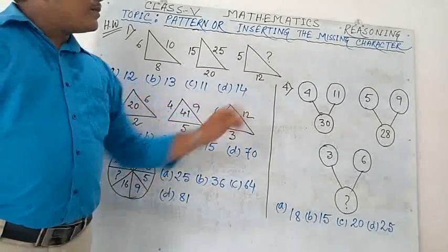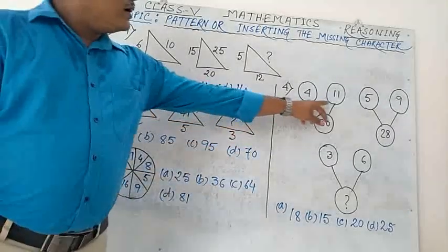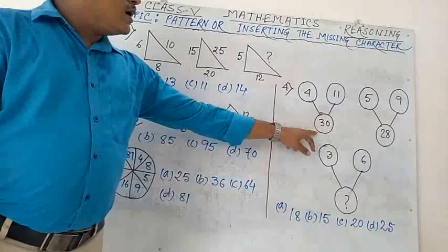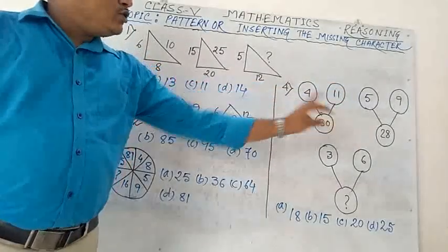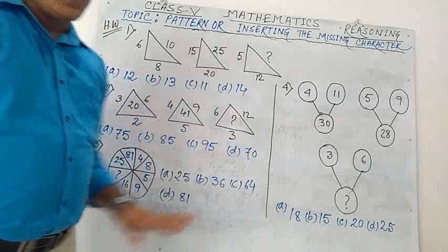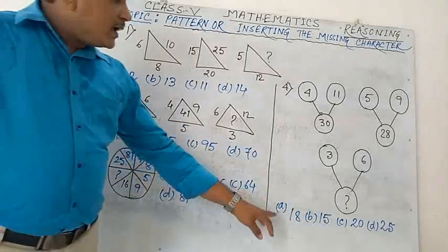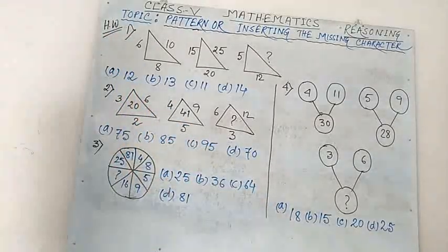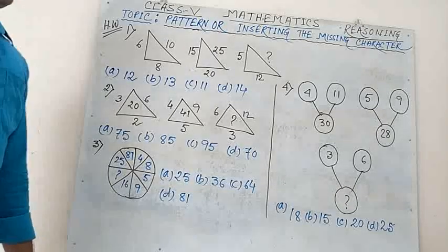Number 4: 4, 11 → 30; 5, 9 → 28; 3, 6 → question mark. Options: A) 18, B) 15, C) 20, D) 25.